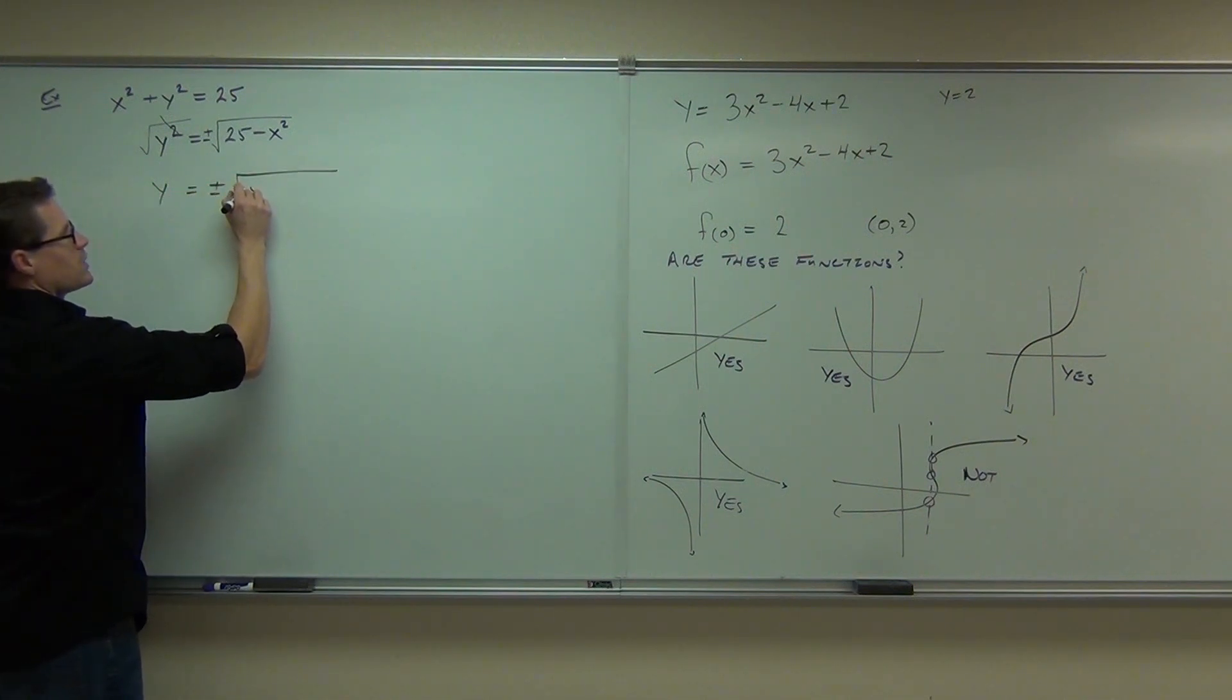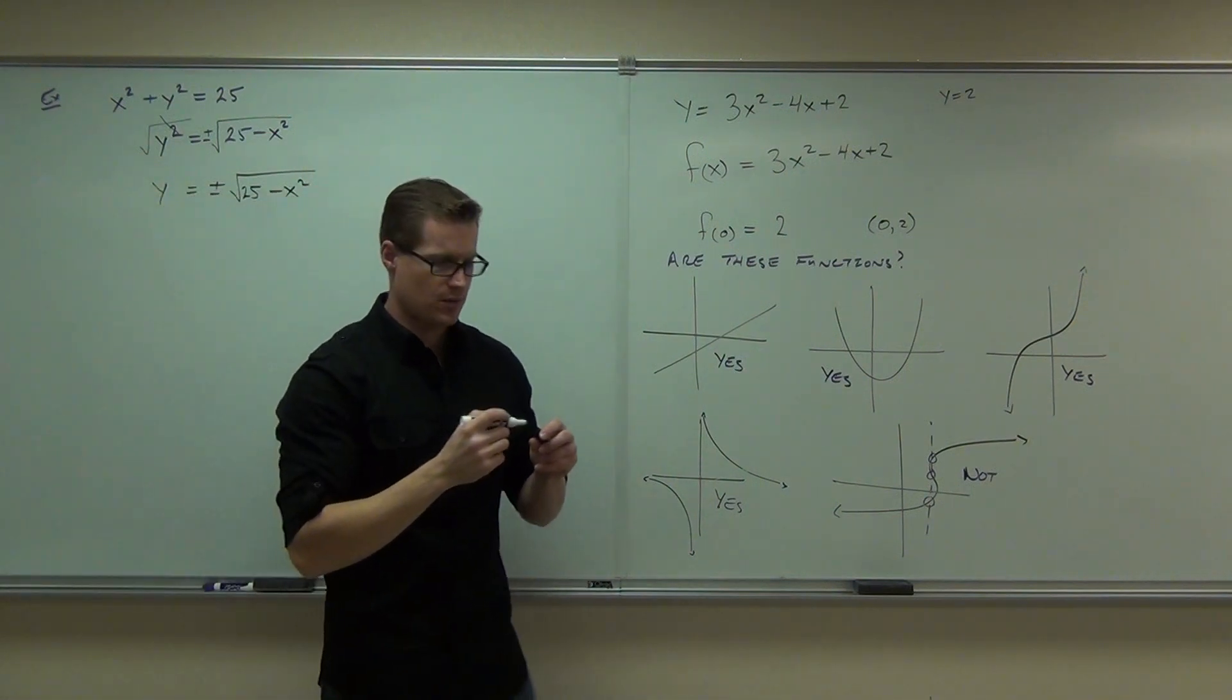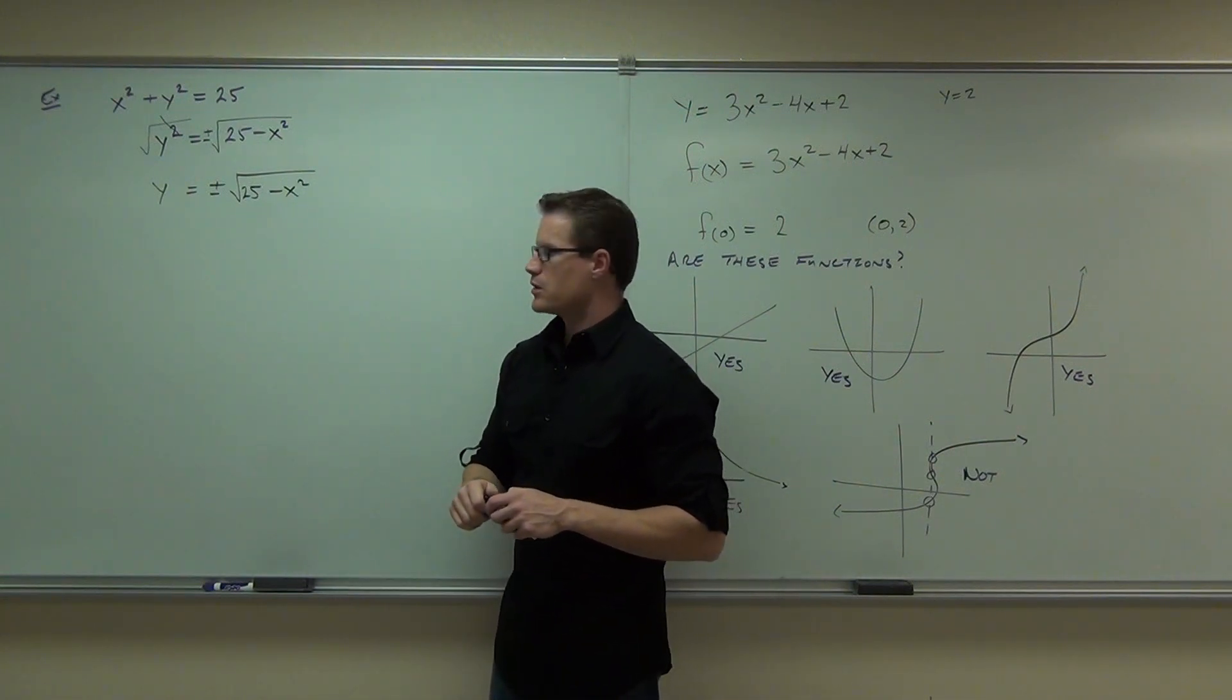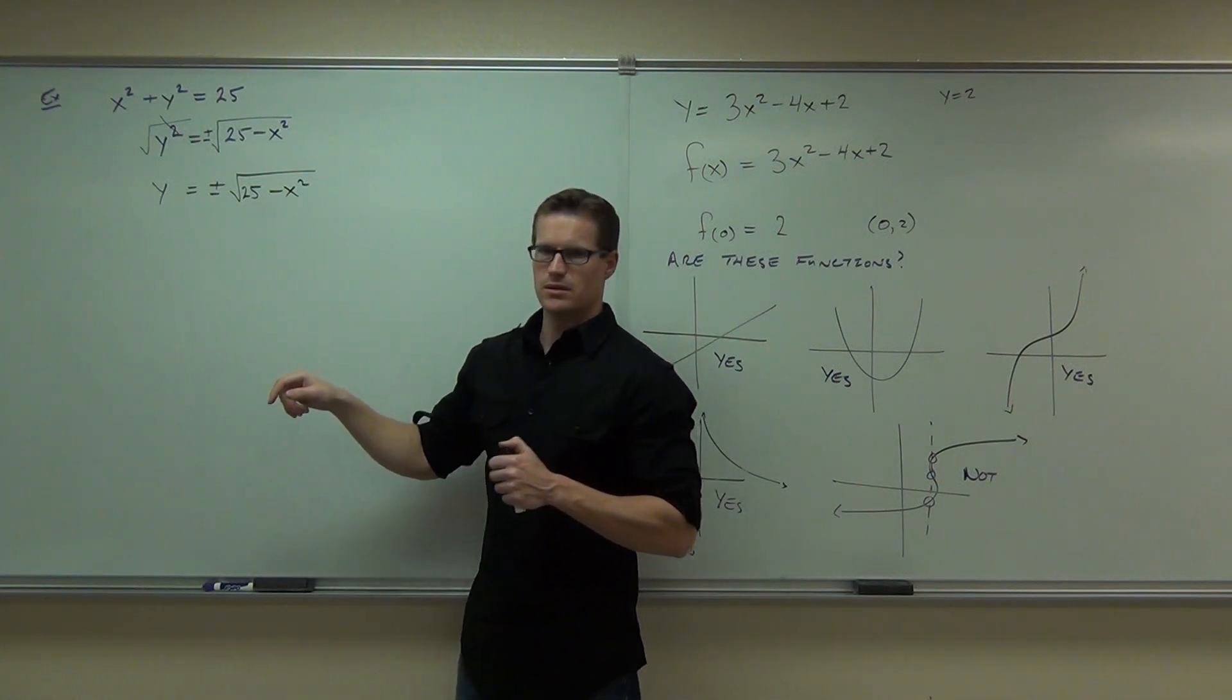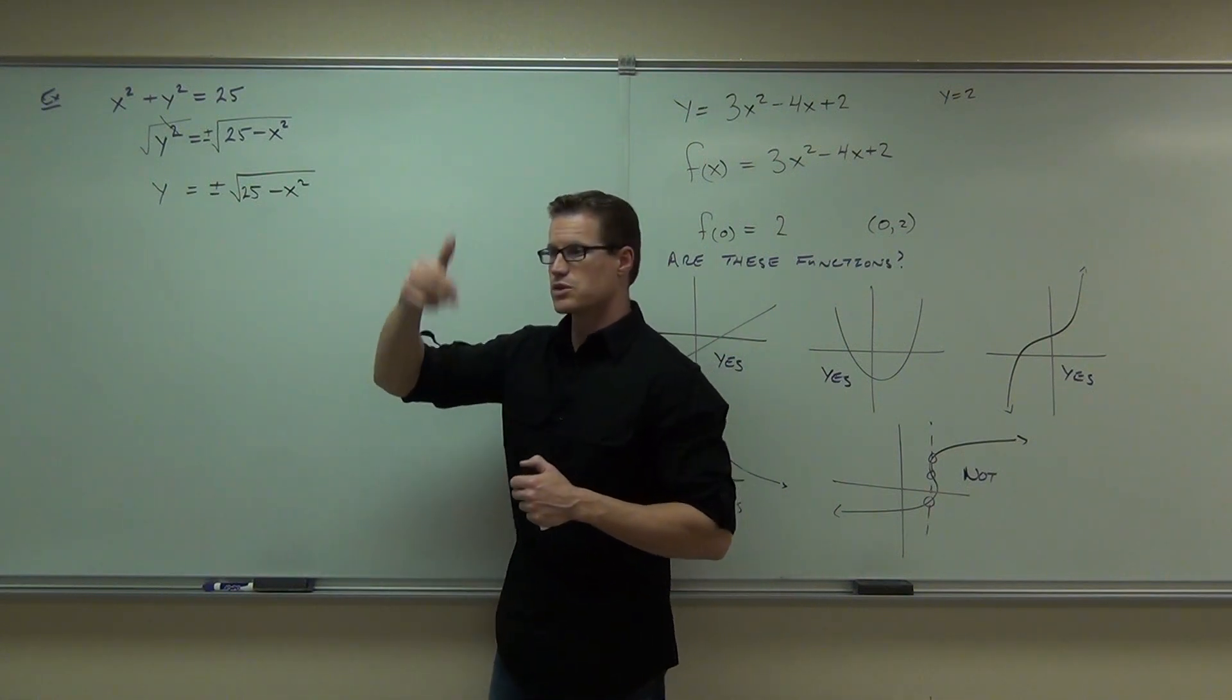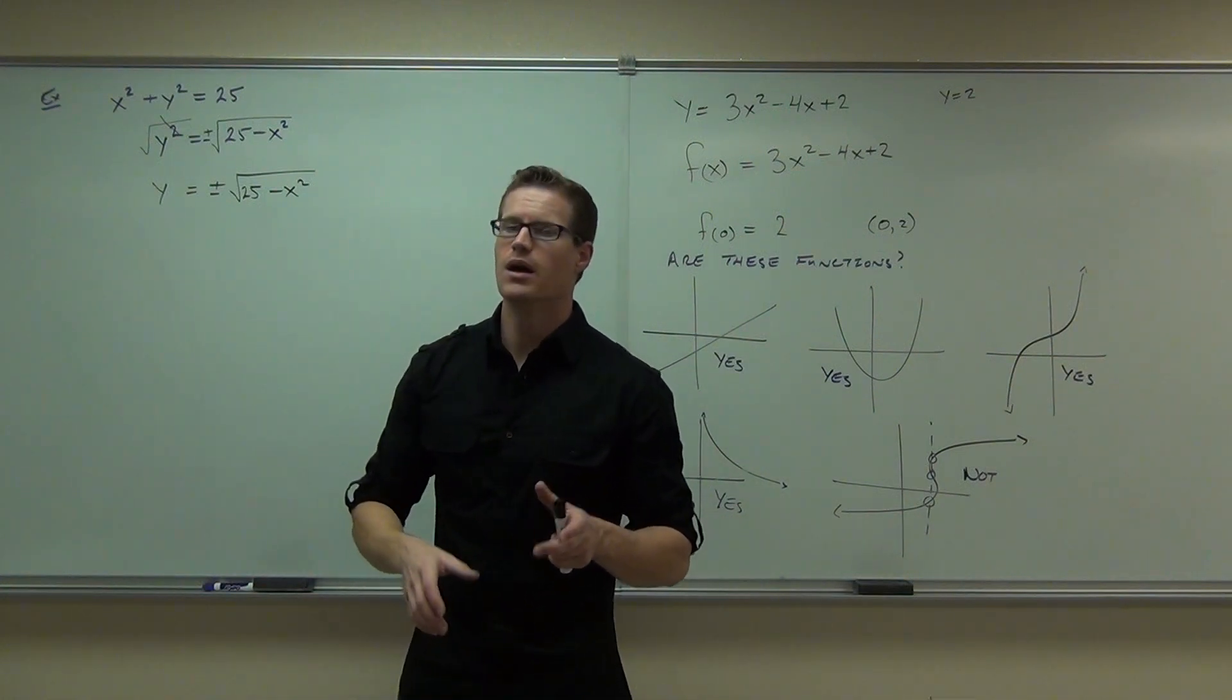Do you see the situation now? I want you to try to plug in a number and tell me how many answers you get out. How many outputs you get out. How many are you going to get? Yeah, because if you plug in something like, I don't know, 4, you're going to get 25 minus 16, right? You're going to get 9. The square root of 9. But then you're going to take plus 3 and minus 3. That's giving you those two answers. As soon as you have that out of a formula, it's not a function.